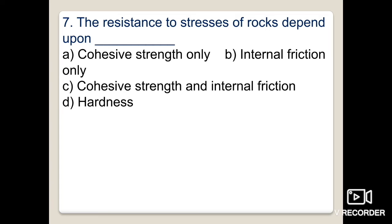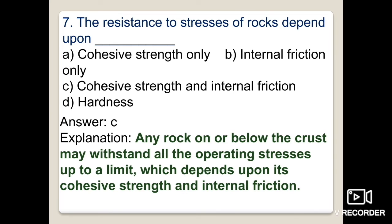The seventh question: the resistance of rocks to stresses depends upon cohesive strength only, internal friction only, cohesive strength and internal friction, or hardness? The answer is cohesive strength and internal friction. Any rock on or below the crust can withstand operating stresses up to a limit, after which bending or brittleness occurs. This depends on its cohesive strength as well as internal friction — option C is correct.